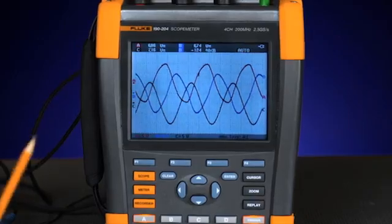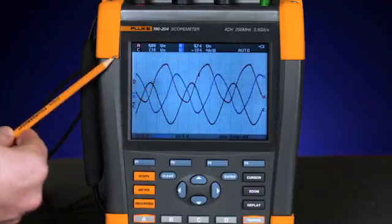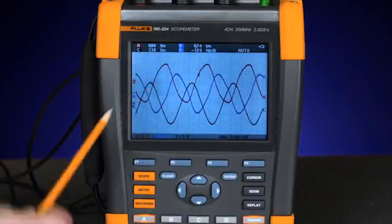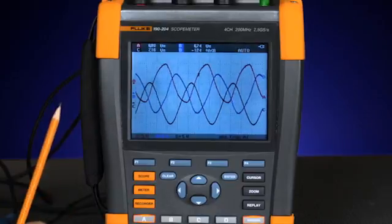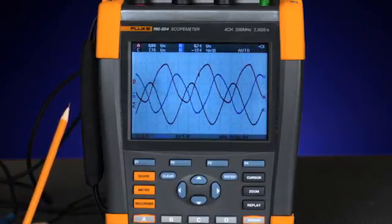What you see on the screen now are the four measurements set up to measure key parameters: the voltage of phase A, B, and C, as well as the phase angle between phases B and C.